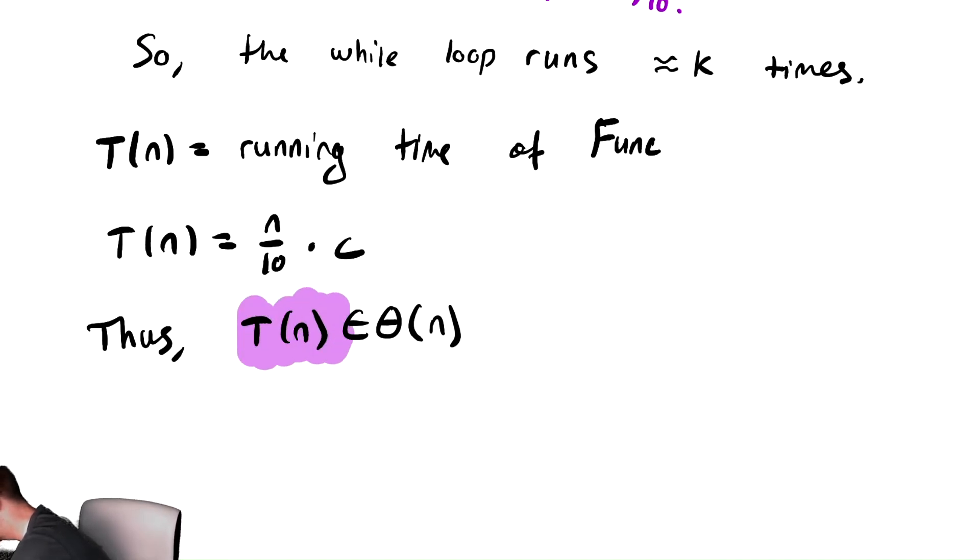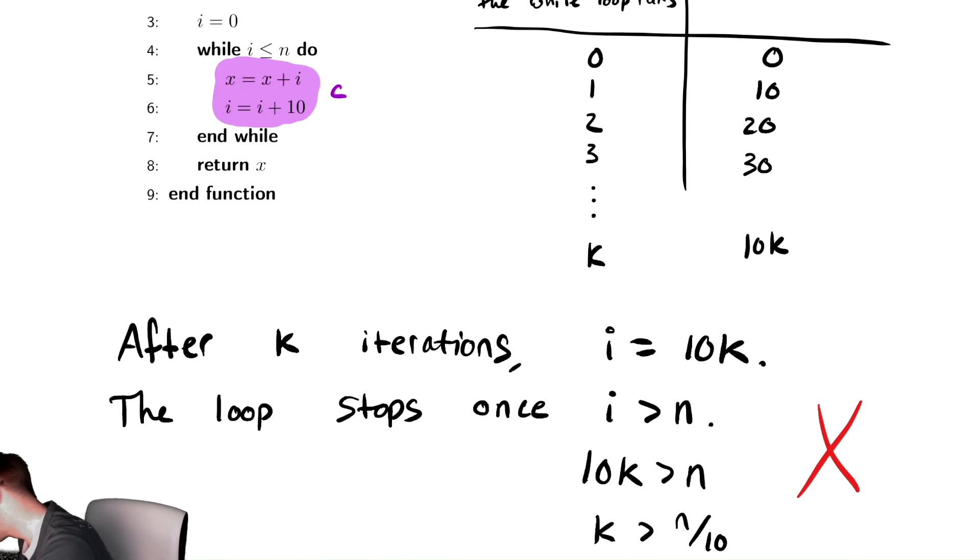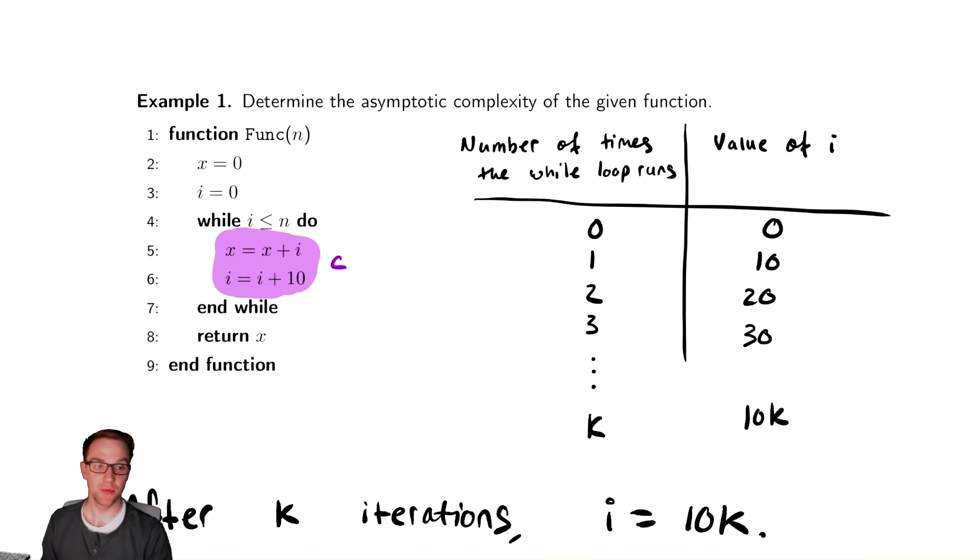I claim this isn't that surprising, just on an intuitive level. And let's go back up to the code and try to figure out why. So if we look at the while loop, as a rough guess, we start with i equals 0, and we're adding 10 to it each time. How many times do you have to add 10 to get to n? Well, about n divided by 10. So of course, that while loop runs about n divided by 10 times. Without doing any of the sort of math that we did here, our intuitive reasoning seems to hold up.